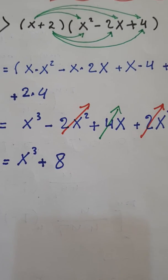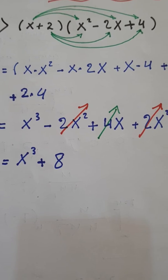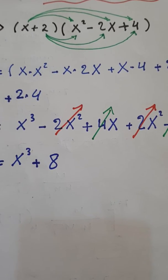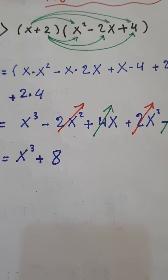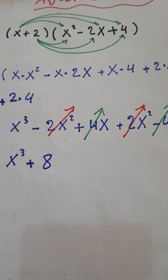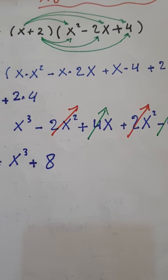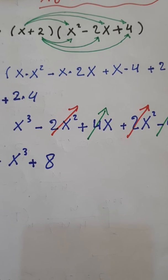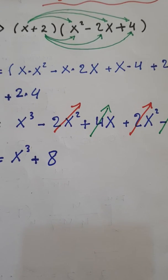x multiply x squared, 1 plus 2, and we have 3. x x is cubic, and minus 2x squared, because x, 1 plus 1, go to, and we have 2x squared.